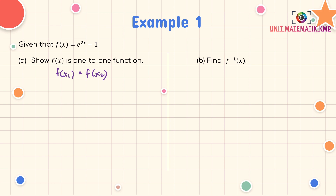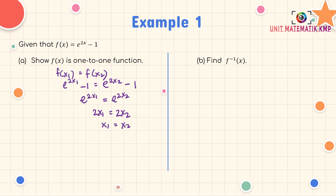Substitute f(x₁) and f(x₂) into the function: e^(2x₁) − 1 = e^(2x₂) − 1. Simplify the equation: e^(2x₁) = e^(2x₂). We can compare the powers, so 2x₁ = 2x₂, therefore x₁ = x₂. Since f(x₁) = f(x₂) implies x₁ = x₂, therefore f(x) is a one-to-one function.